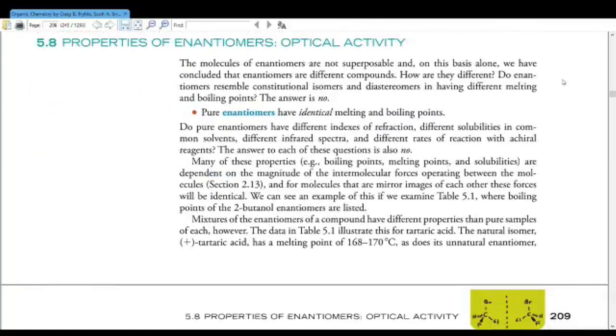Now, optical activity. For this part, the textbook explains it very well, so we're going to follow along with what it has to say. The molecules of enantiomers are not superposable, and on this basis alone, we have concluded that enantiomers are different compounds. How are they different? Do enantiomers resemble constitutional isomers and diastereomers and having different melting points and boiling points? The answer is no, which you already know because I already told you that. Pure enantiomers have identical melting and boiling points. Very important to remember it though.